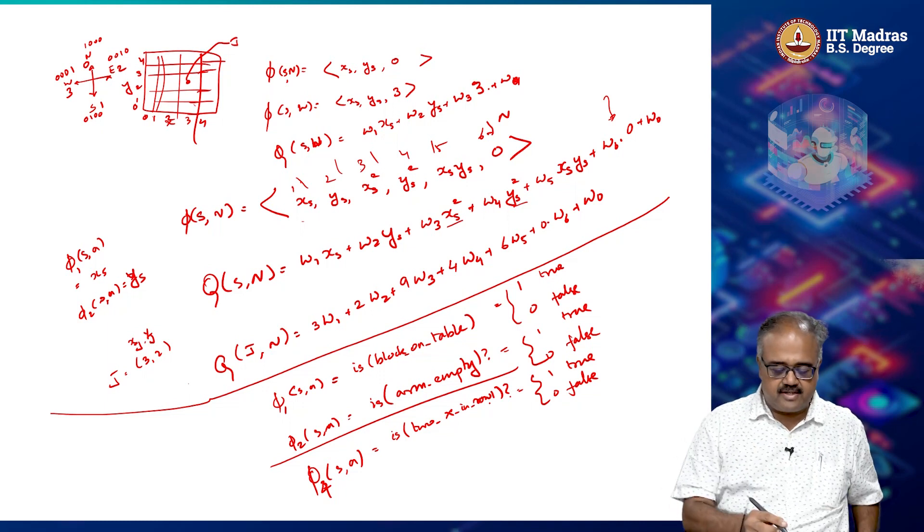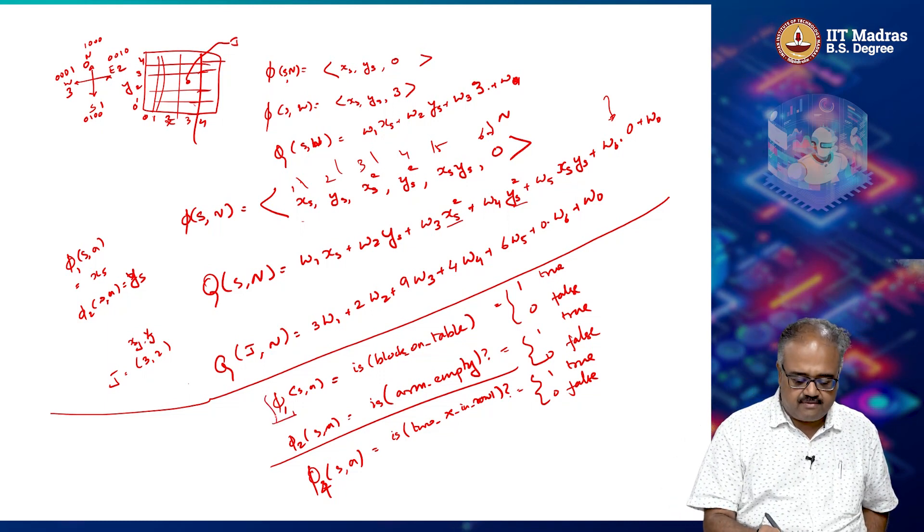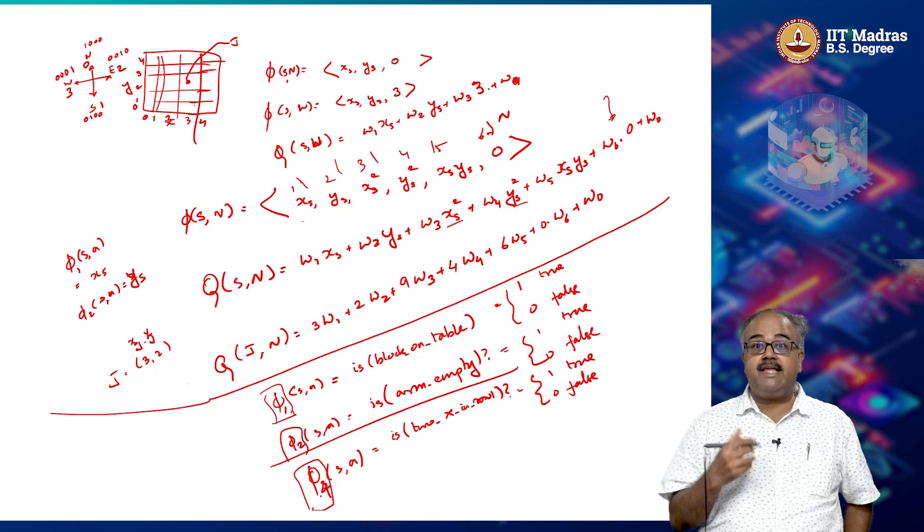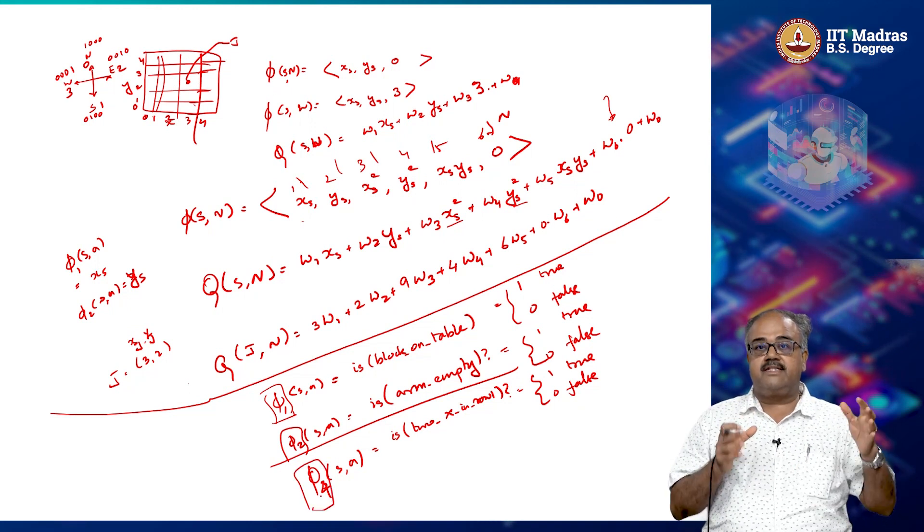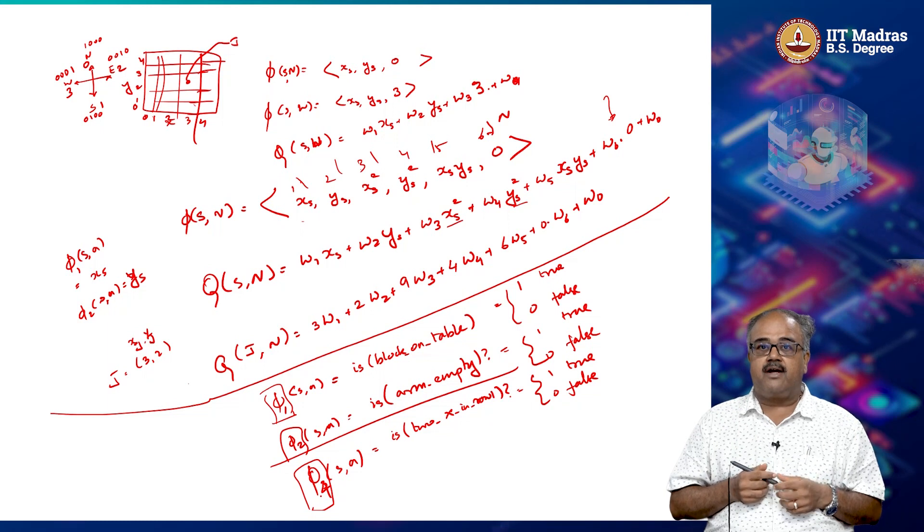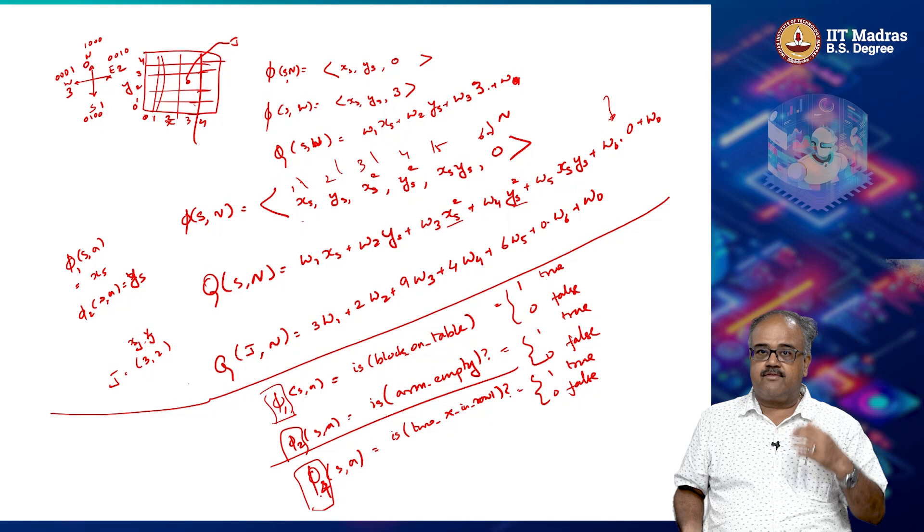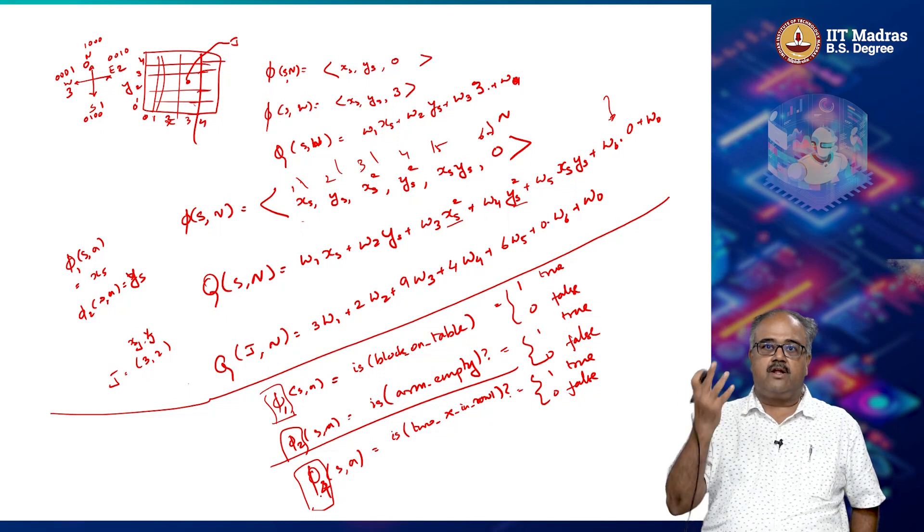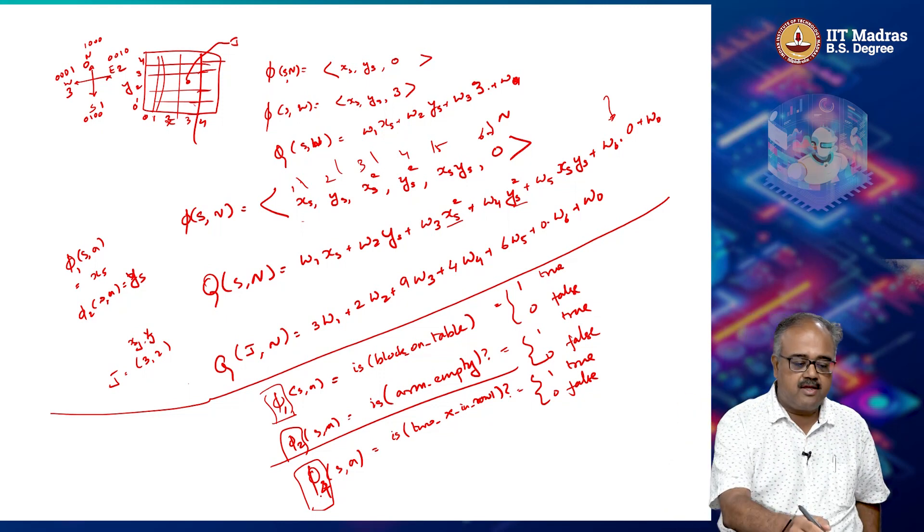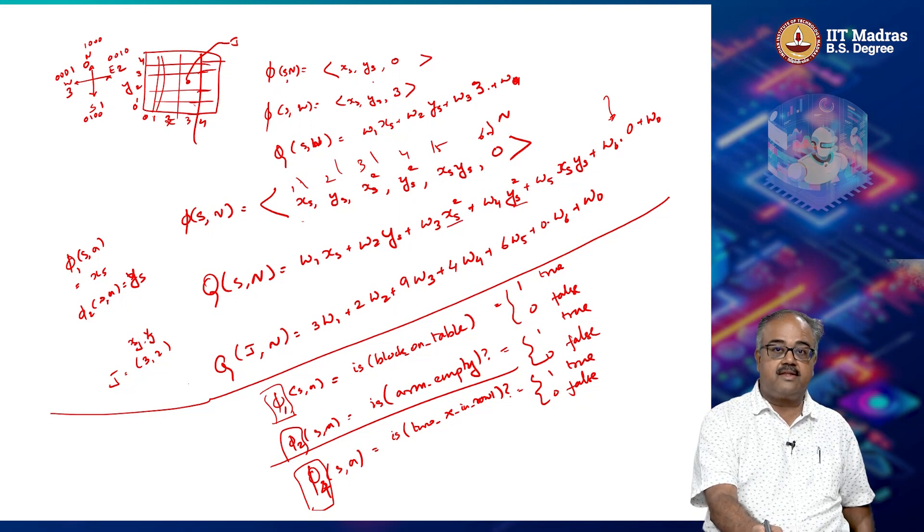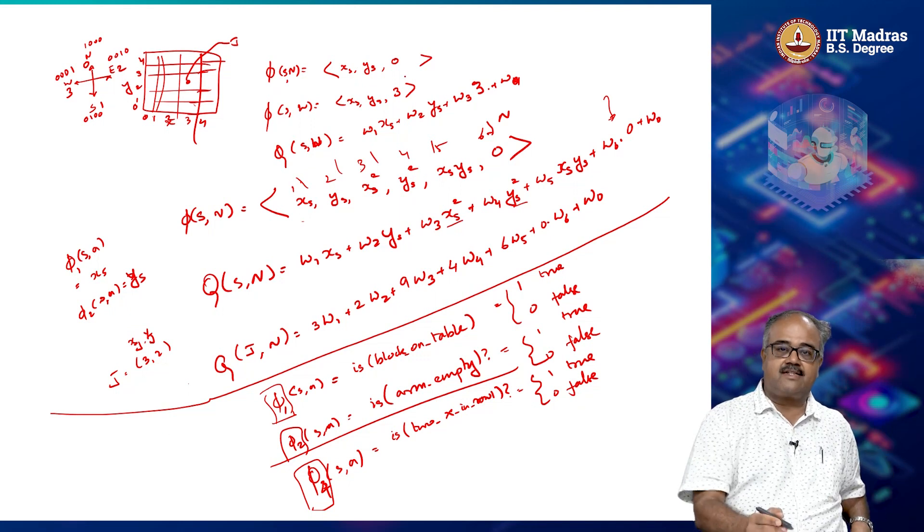So I kind of introduce a terminology here. So these each of these phi 1, phi 2, phi 3, we will now call as a feature of the state or the state action pair. And that we are going to use for representing the state action for a function approximator. So these are all the features that we will be using. So in the original example of the grid world, the features were x s, the x coordinate, the y coordinate and the action.